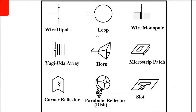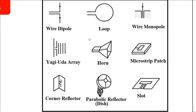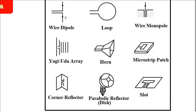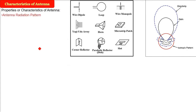There are different types of antennas depending upon the application or use. The broad categories are omnidirectional, directional, and semi-directional. Then you have the wire dipole, loop, wire monopole, Yagi, and the horn antenna, the microstrip antenna, the corner reflector, slot, and the parabolic reflector — which you generally see in radio stations and TV stations — also known as dish antennas.